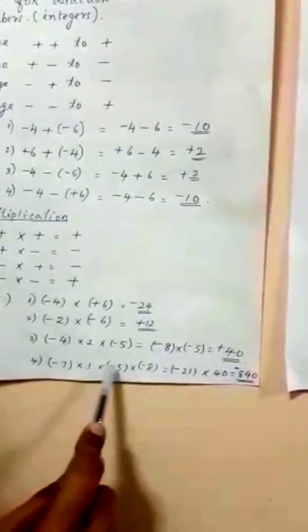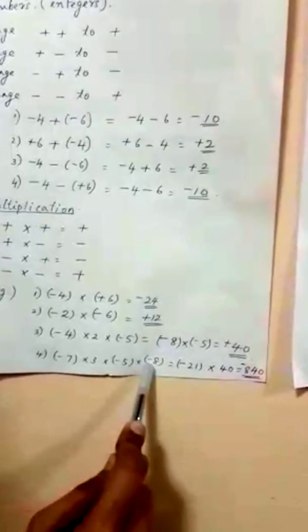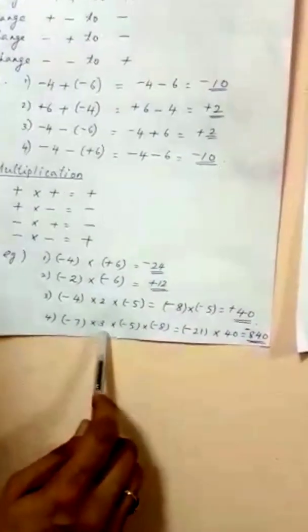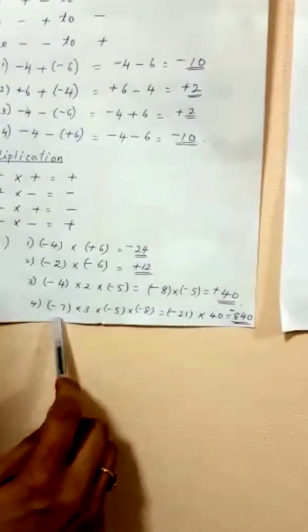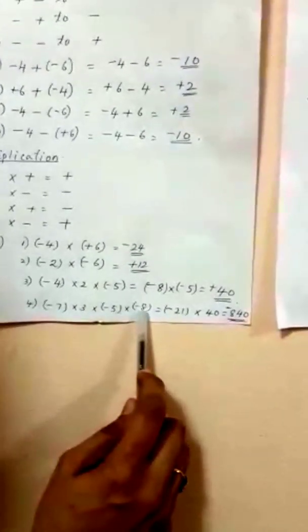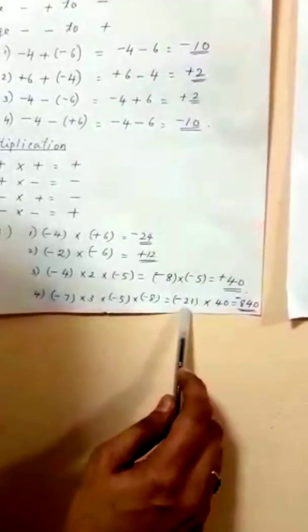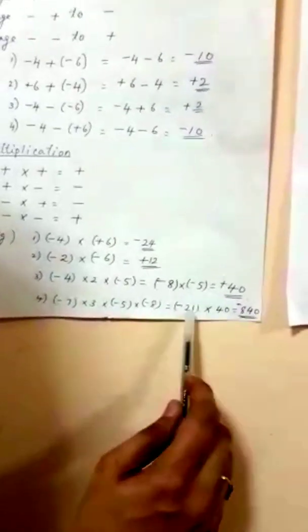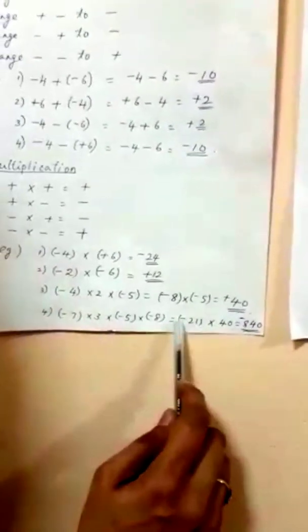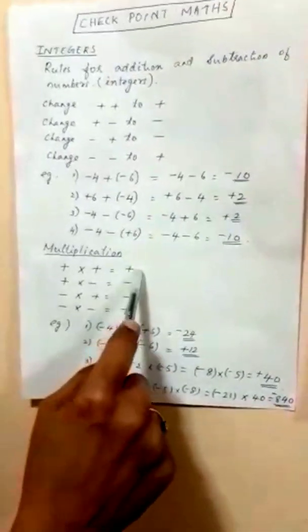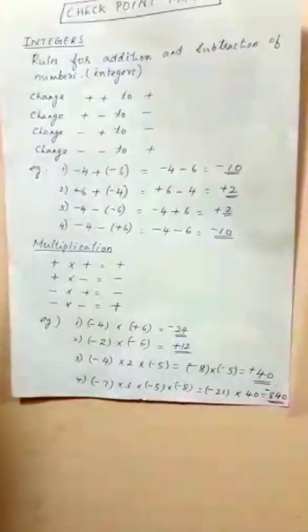For four numbers — minus 7 times 3 times minus 5 times minus 8 — multiply two at a time. 7 times 3 is 21, opposite sign gives minus 21. 5 times 8 is 40, same sign gives plus 40. Then minus 21 times 40: different sign, so answer is minus 840. Rule: same sign gives plus, different sign gives minus.